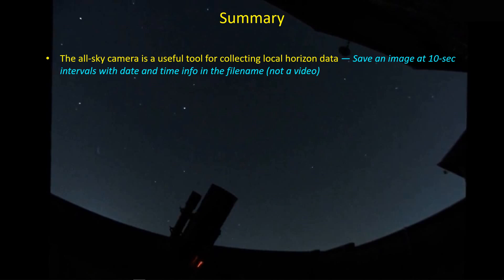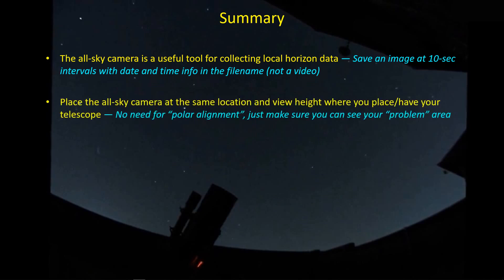I found that this all-sky camera lens that came with the original ZWO ASI 120MC is actually a pretty useful tool. I've played around with it before taking all-sky images, but it's actually very useful when paired with Stellarium for identifying the azimuth and altitude of critical points along your horizon. You want to take data at about a 10-second interval for fairly fine resolution so you can go back and identify where the star first becomes visible — 10 seconds seems to work fairly well. Save the files as a series of images rather than a video, and include the date and time stamp in the file name so you can use that information in Stellarium.